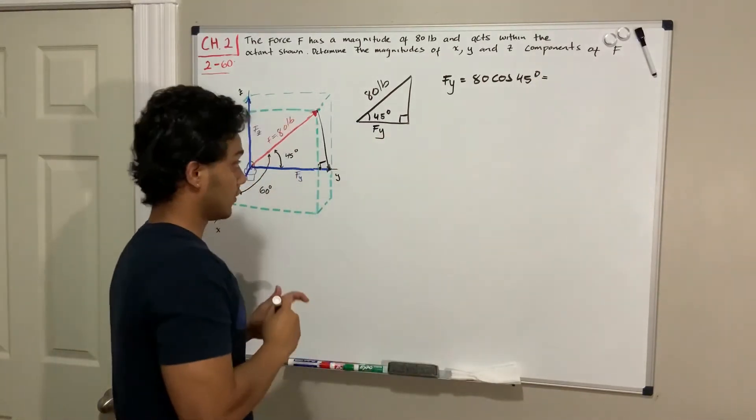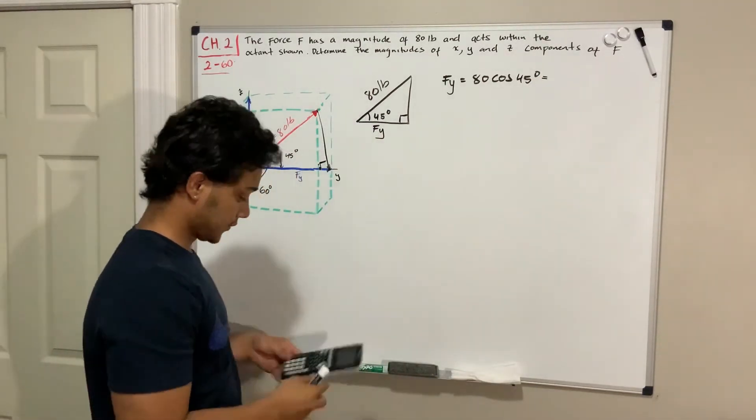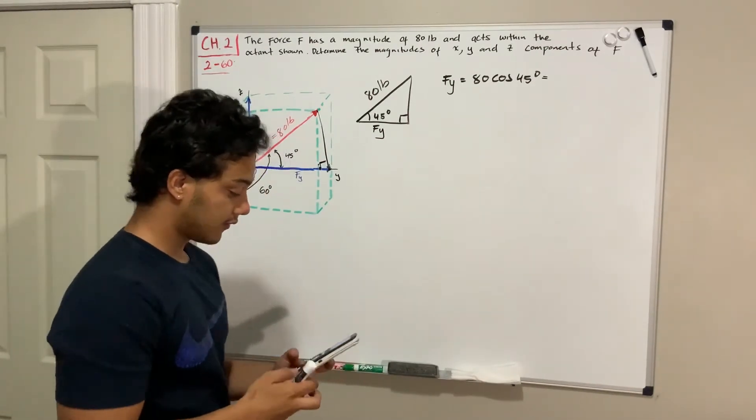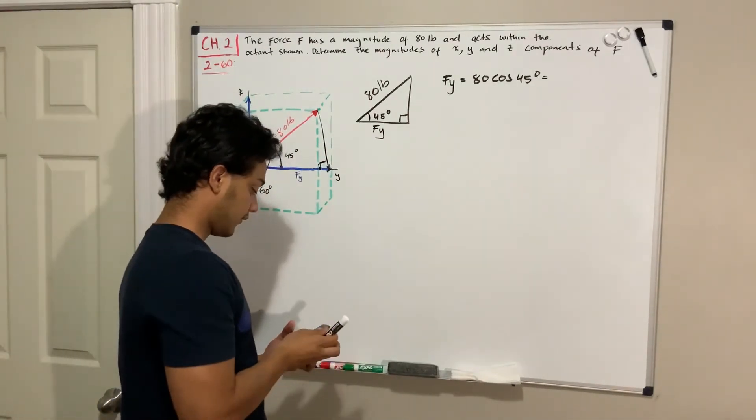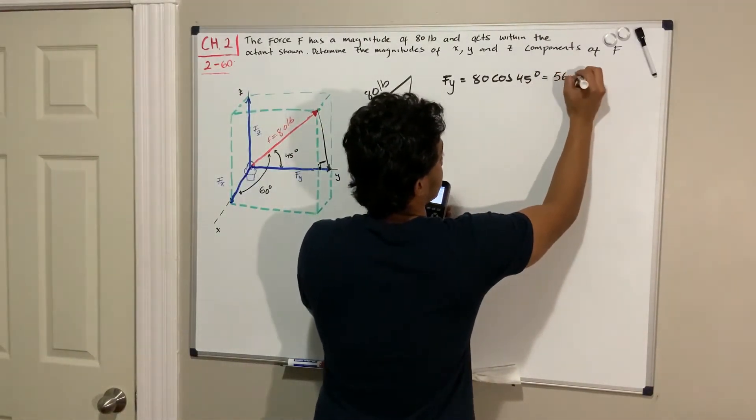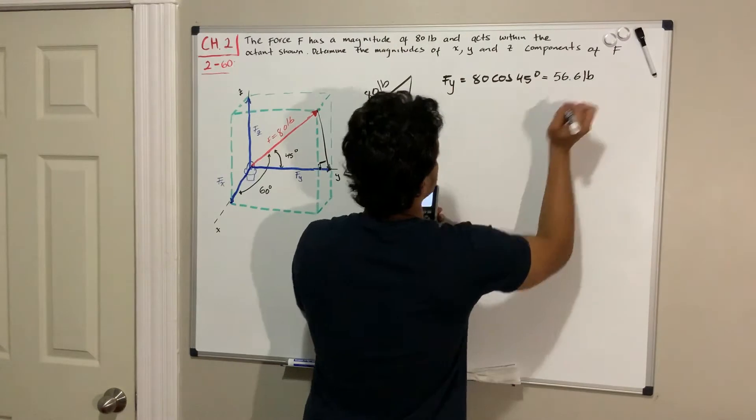So if we use our calculator, we can do 80 cosine of 45, and we get that it's actually 56.6. So we get 56.6 pounds.